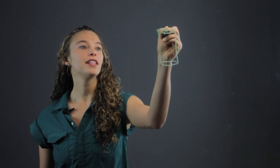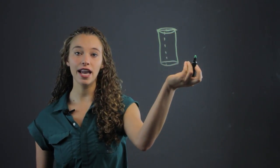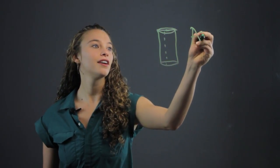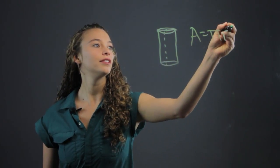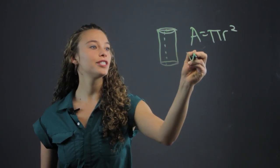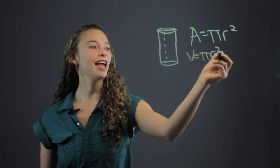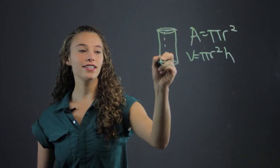We know that the area of a circle is pi r squared. So to find the volume, we're just going to multiply that by the height of the cylinder.